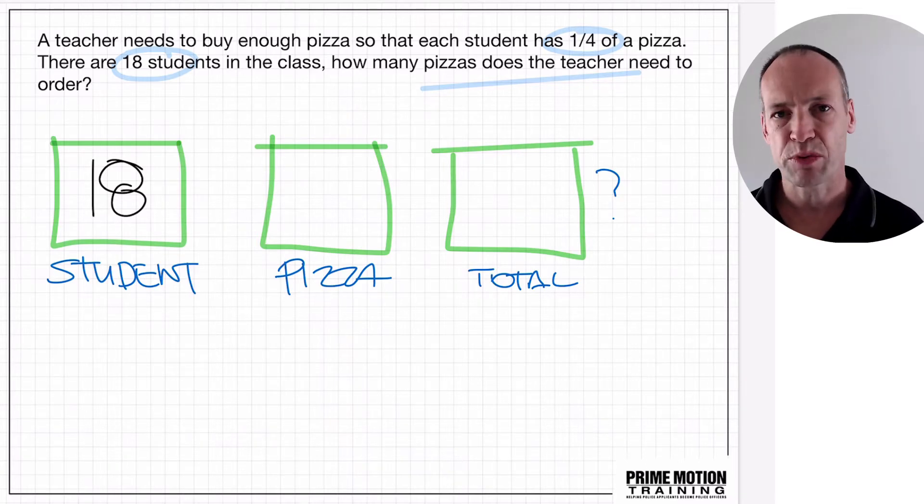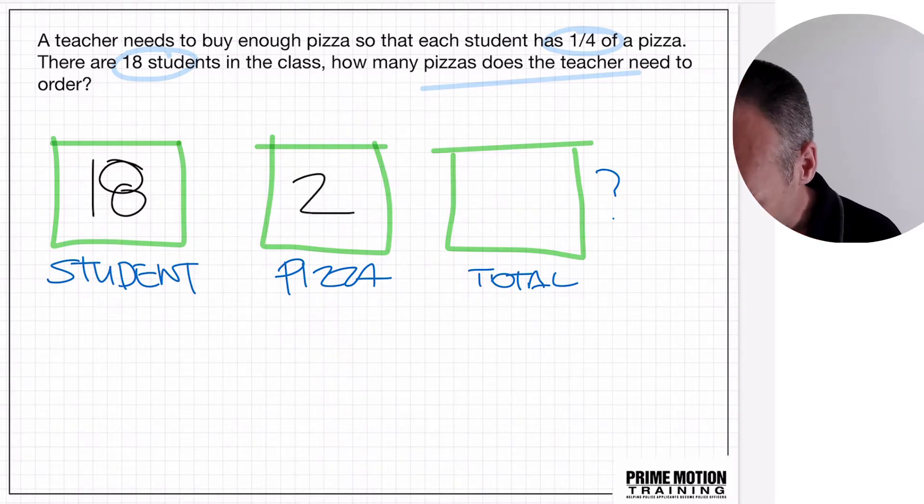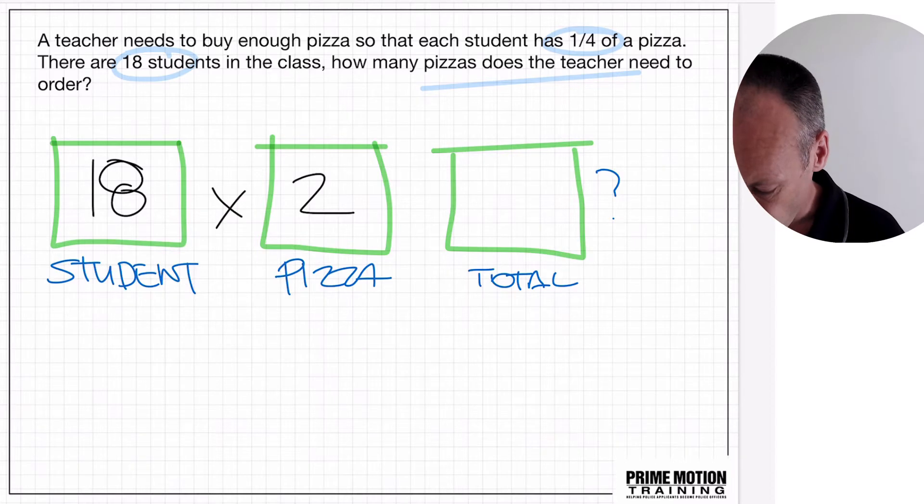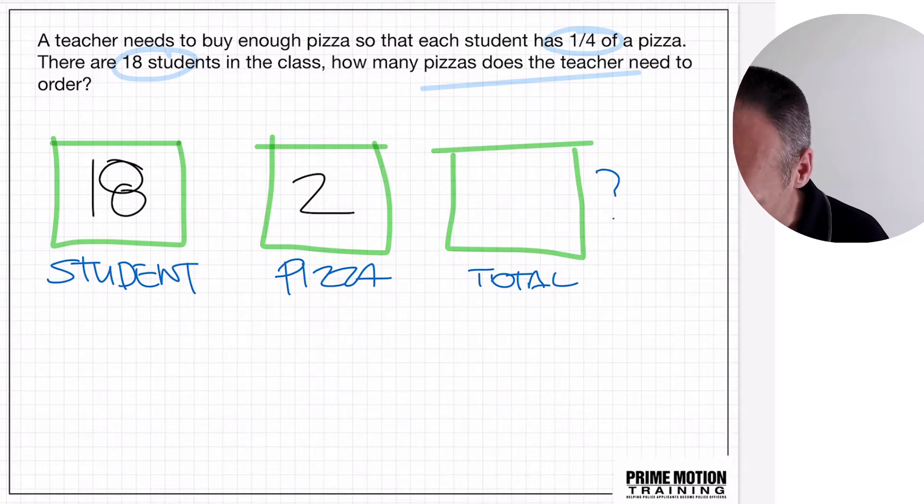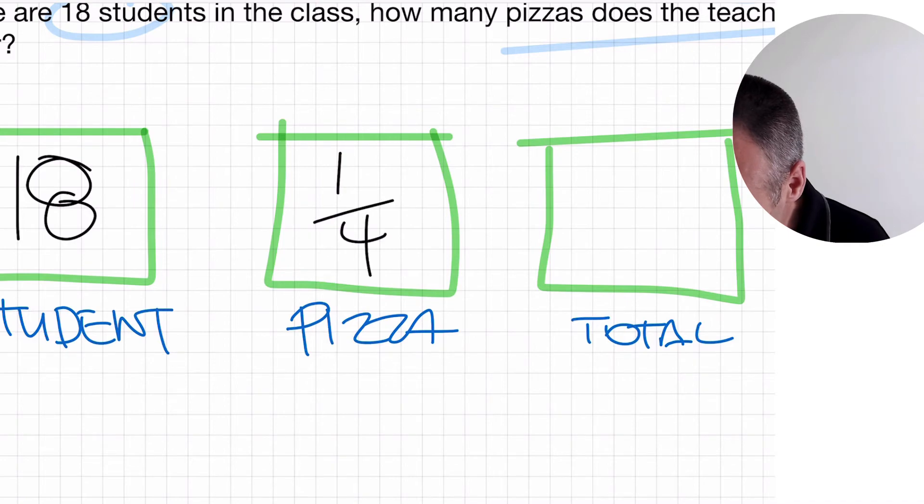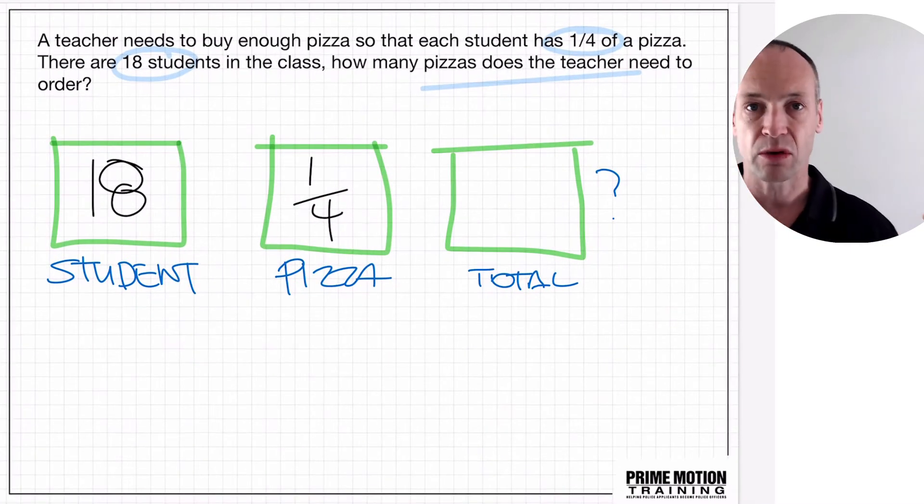Well, that seems pretty straightforward. 18, well, if there's two pizzas each, well, 18 times two, that's 36. 36 pizzas we need to order. But of course it's not two each, it's a quarter of a pizza each. Now for some reason when it's a quarter, everything goes out the window.